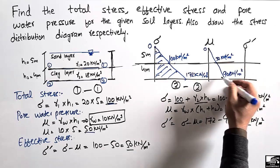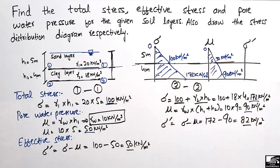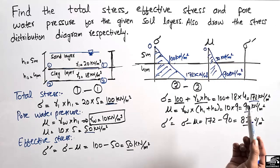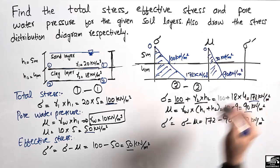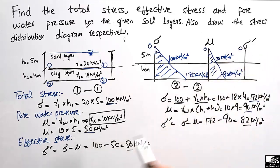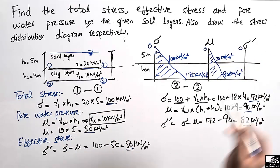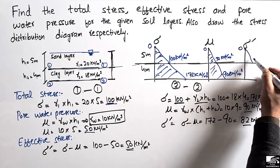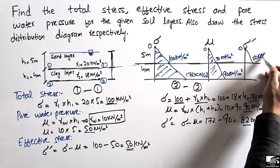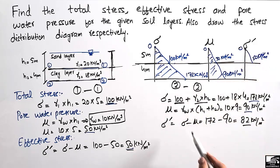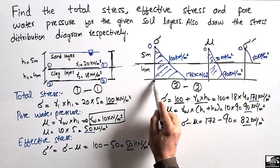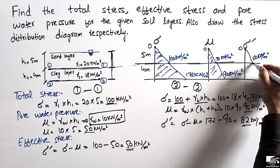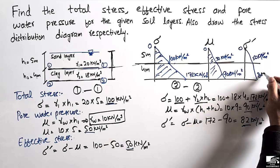This is the pore water pressure diagram. For the effective stress diagram: starting at zero, it increases to 50 kN/m² at five meters (section 1-1), then to 82 kN/m² at nine meters (section 2-2).